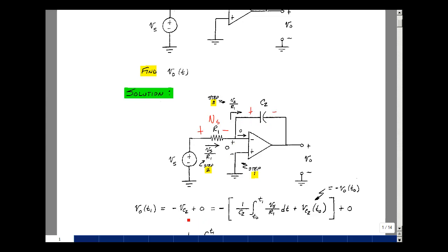In our class notes, we said that the voltage across the capacitor is the integral of the current through it, which is V sub s over R1, from some time T0 to T1, divided by the capacitance, plus the initial condition of the capacitor at time T equals T0.